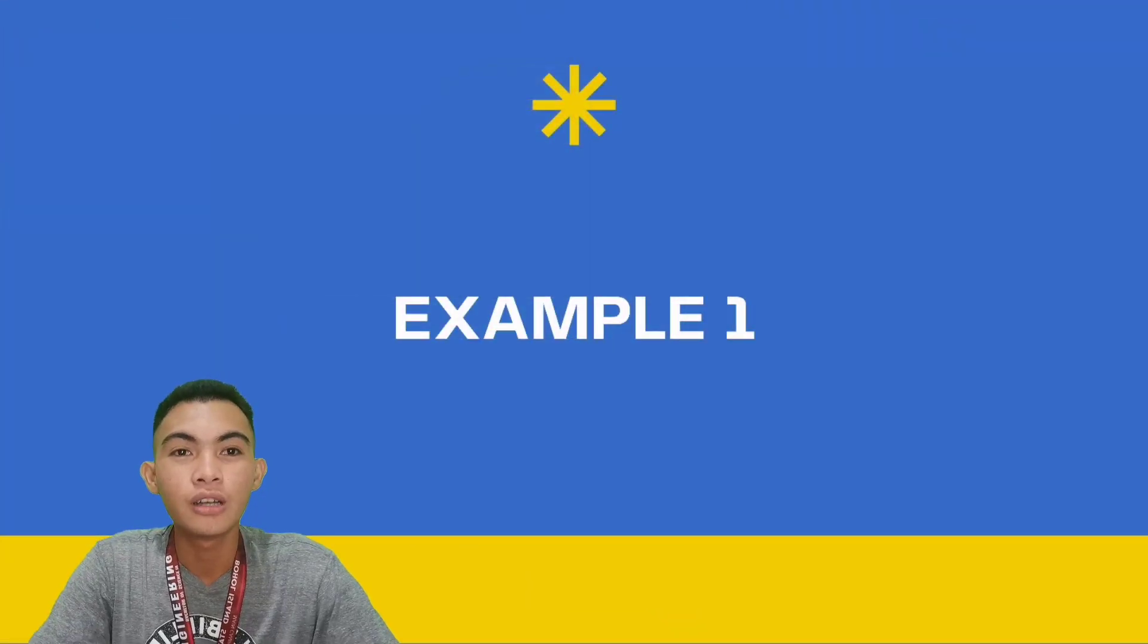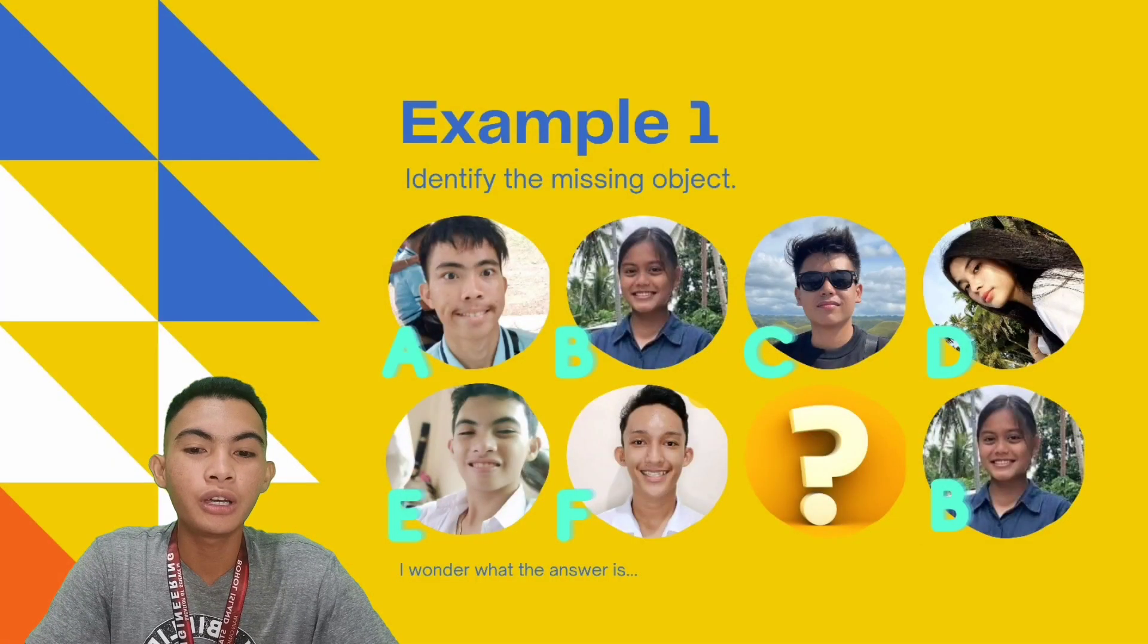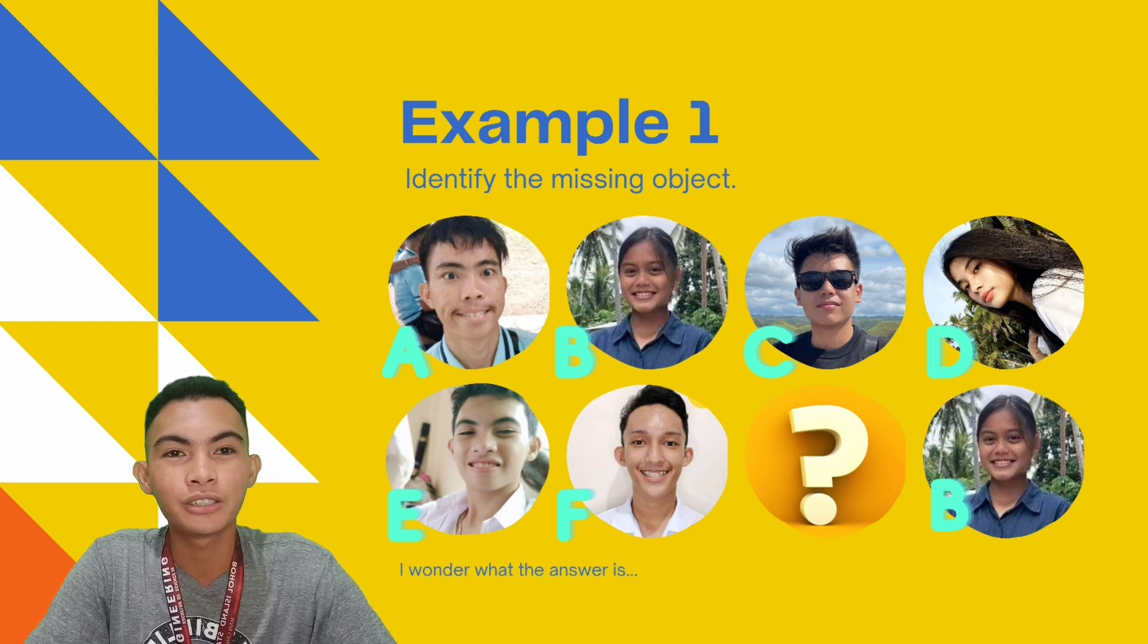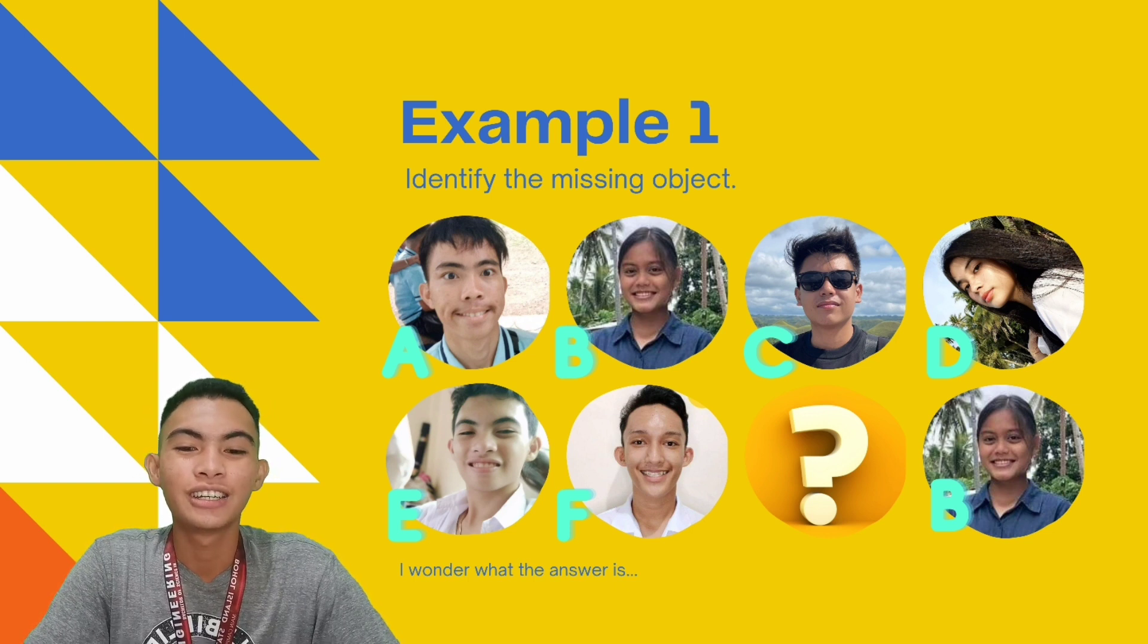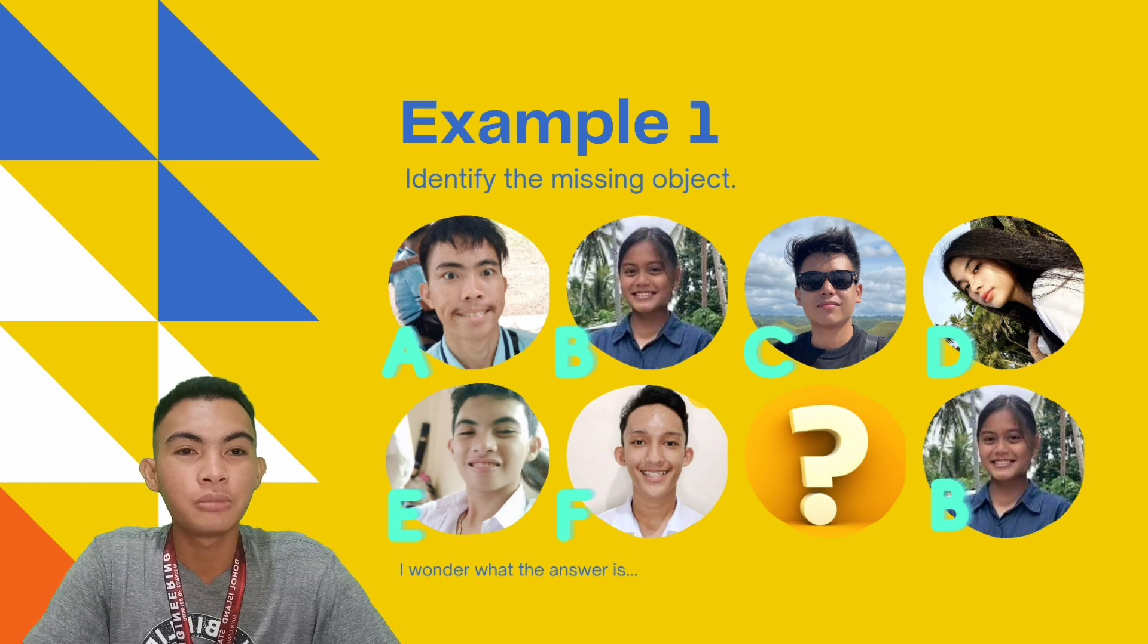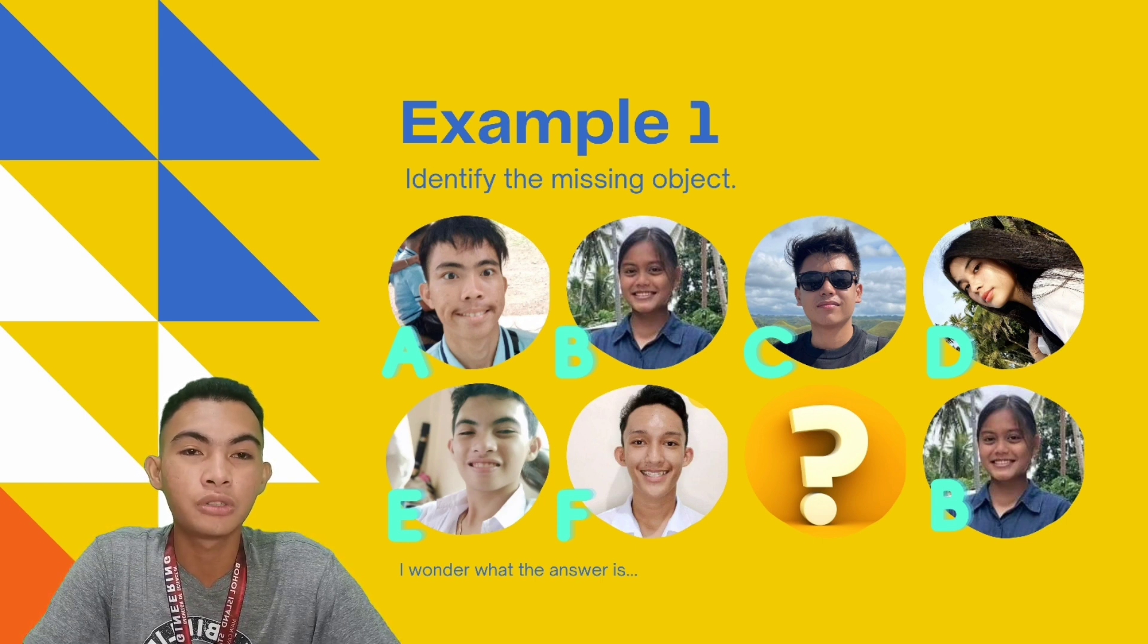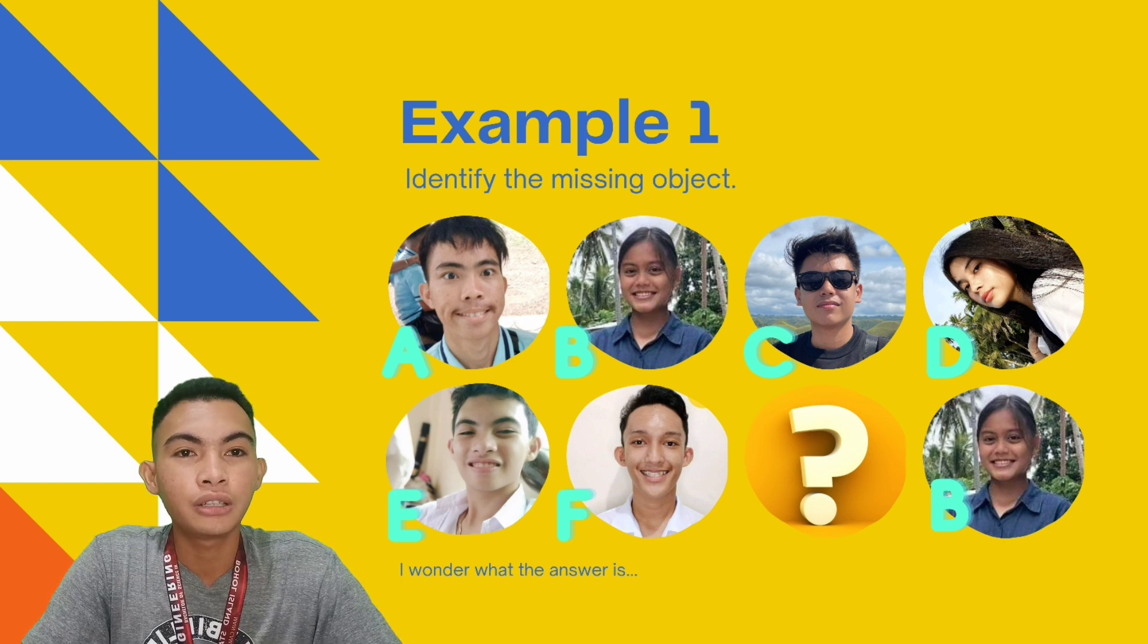Example number one. For our first example, we have here a pattern of letters with corresponding pictures of my group mates' beautiful faces. In this example, we have to find the missing object. So, in order to find the missing object, we have to first identify the pattern.